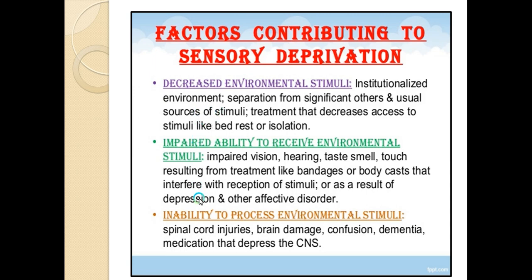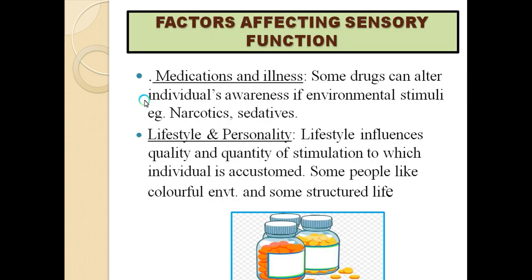Third is the inability to process environmental stimuli — stimuli are present and perceived, but interpretation occurs in the brain. If there are brain issues or issues related to the nervous pathway, this can cause inability to process environmental stimuli. This occurs in spinal cord injuries, brain damage, confusion, dementia, or medications that depress the central nervous system.